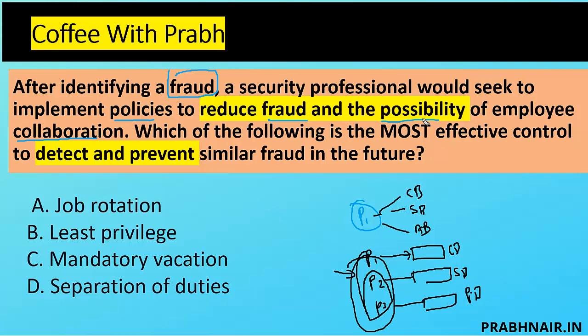Which of the following is the most effective control to detect fraud and prevent similar fraud in the future? I'm directly eliminating separation of duty, because it was introduced to prevent fraud by one person by splitting the function across three people — but they can still collude. Least privilege is a control to enforce separation of duty. So options D and B are removed, leaving us with A (job rotation) and C (mandatory vacation).